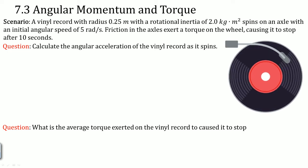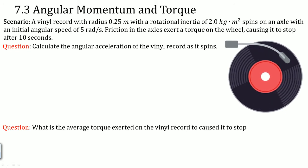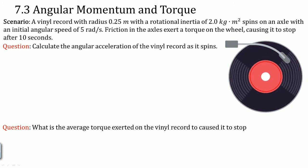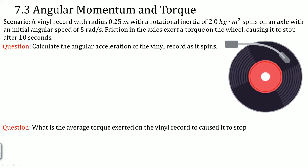Scenario. A vinyl record with a radius of 0.5 meters and a rotational inertia of 2.0 kilograms per meter squared spins on an axle with an initial angular speed of 5 radians per second. Friction in the axle exerts a torque on the wheel, causing it to stop after 10 seconds.